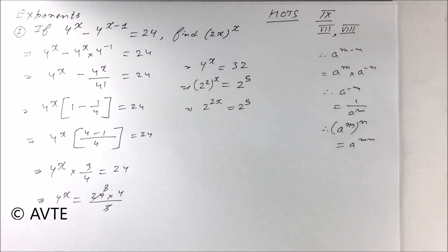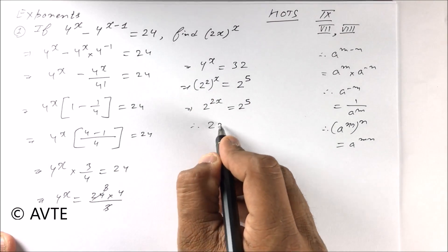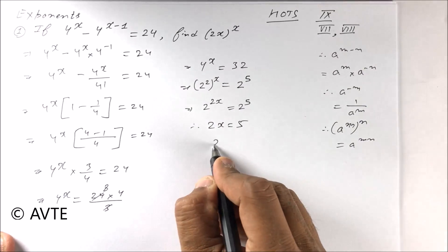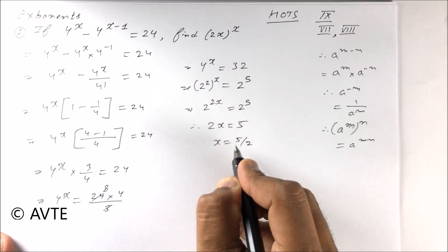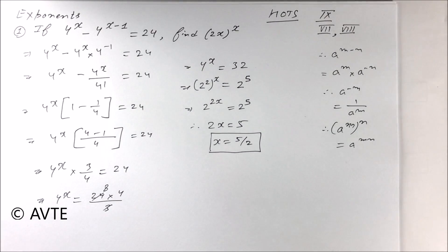When bases are same, we can compare the powers. So 2x equals 5, and x equals 5 by 2. So we got x.